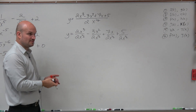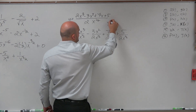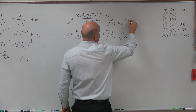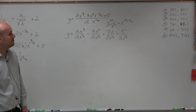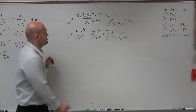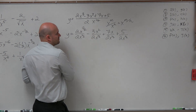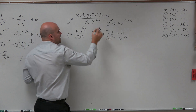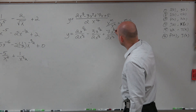Now remember, what happens when we are dividing powers? We subtract exponents. So basically what we need to do is have everything as a power with denominator 2. So instead of x to the third, we write that as 6 over 2. Instead of 2, we write that as 4 halves. Instead of 1, we write that as 2 halves.